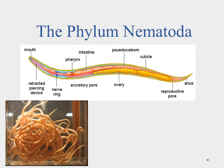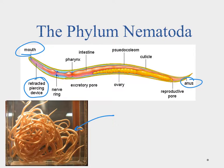Next is the phylum Nematoda, or roundworms — smooth and round all the way around. We're seeing a little more differentiation inside the nematode: a distinct mouth and a distinct anus, giving them a one-way digestive tract. They have a piercing device they can extend to break through the skin of whatever they're attacking. They do have ovaries — there are males and females — we can see a reproductive pore, and they have a rudimentary one-way digestive tract.